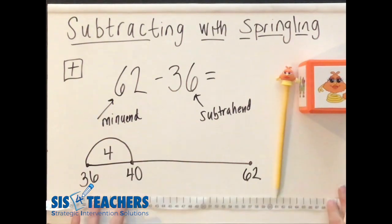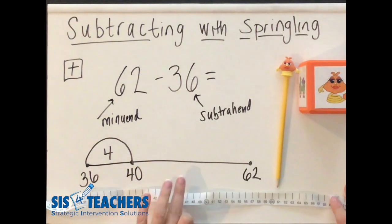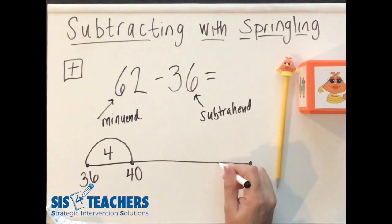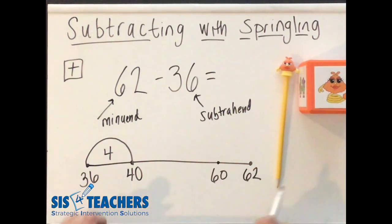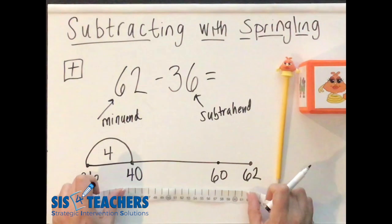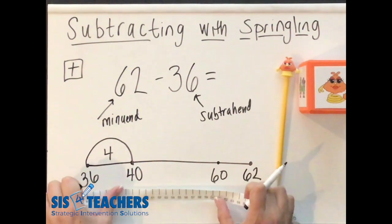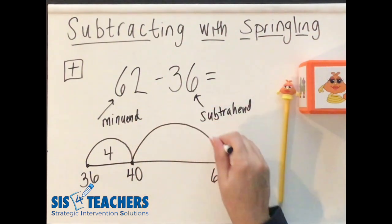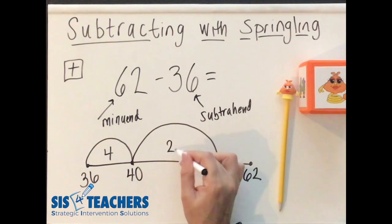Now some students might want to go from the 40 to the 50 to the 60, which you certainly could do that. But I know Springling would be really happy if I hopped even further. So I could go past the decade 50 and continue to 60. We're going to say hop, Springling hop. She's going to hop really far. In this case, she's going to go 20.